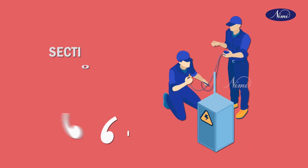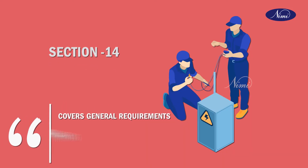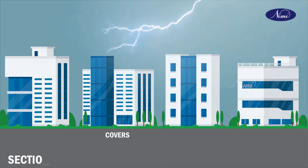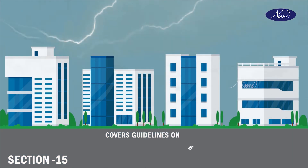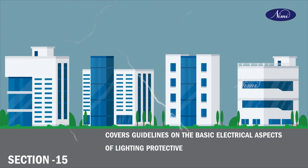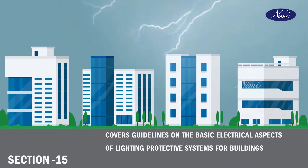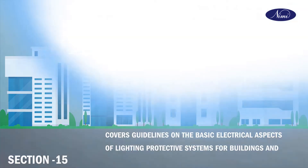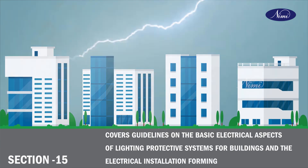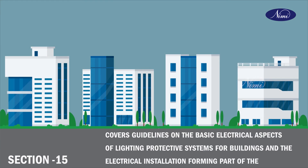Section 13 gives general principles of installations and guidelines on initial testing before commissioning. Section 14 covers general requirements associated with earthing in electrical installations. Section 15 covers guidelines on the basic electrical aspects of lightning protective systems for buildings and the electrical installations forming part of the system.